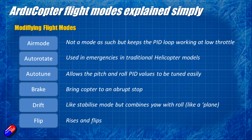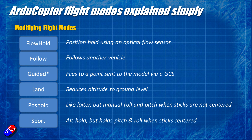Brake brings the copter to an abrupt stop. Drift is like Stabilize but combines yaw with roll, making it feel more like a plane when flying. Flip makes the copter rise and flip. Flow Hold uses an optical flow sensor to hold position in the air so it stays very still. Follow follows another vehicle. Guided flies to a point sent from a ground station — in Mission Planner you can click on the map and the model will fly autonomously to that position. Land reduces altitude to ground level. Position Hold is like Loiter but with manual roll and pitch when sticks aren't centered. Sport is like altitude hold but holds roll and pitch when sticks are centered.